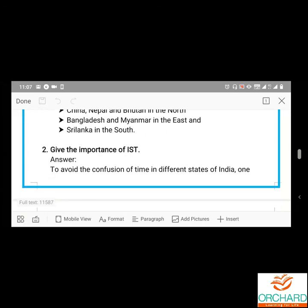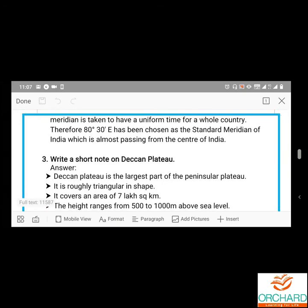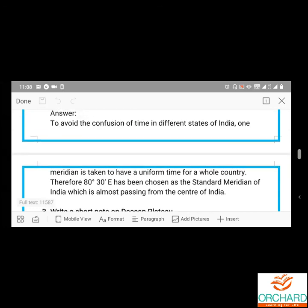Give the importance of IST — Indian Standard Time. To avoid the confusion of time in different states of India, one meridian is taken to have a uniform time for the whole country. From Gujarat to Arunachal Pradesh there are many longitudes, and we have about two hours of difference between the two. That is why 82.5 degrees east, that is 82 degrees 30 minutes east, has been chosen as the standard meridian of India, which is almost passing through the center of India.